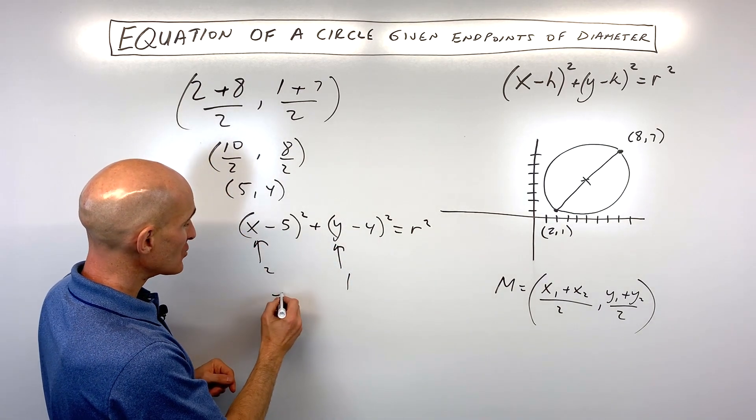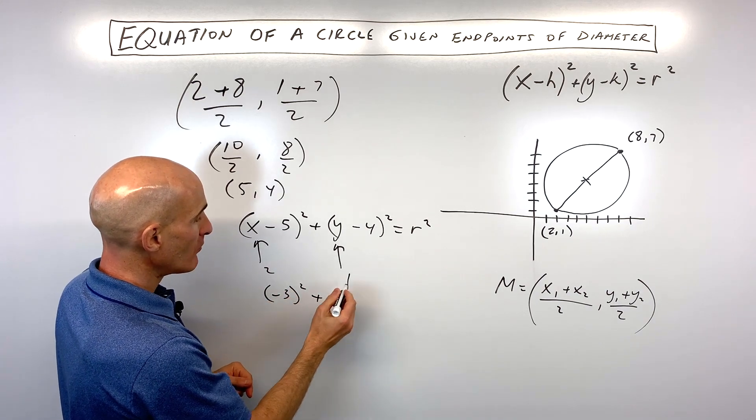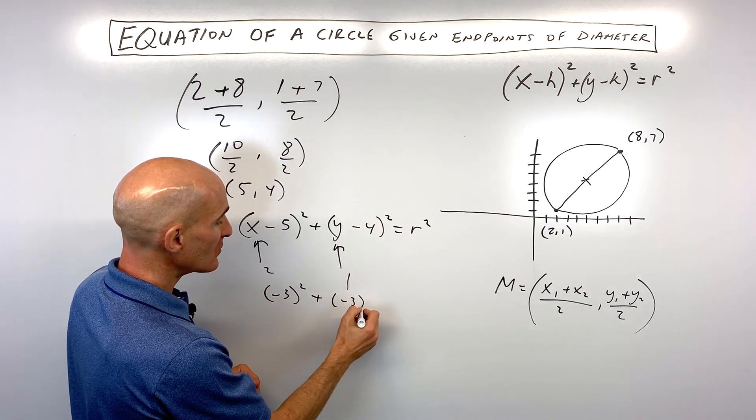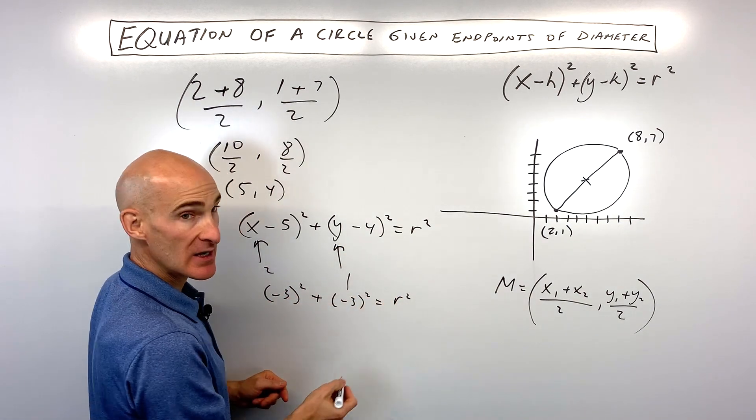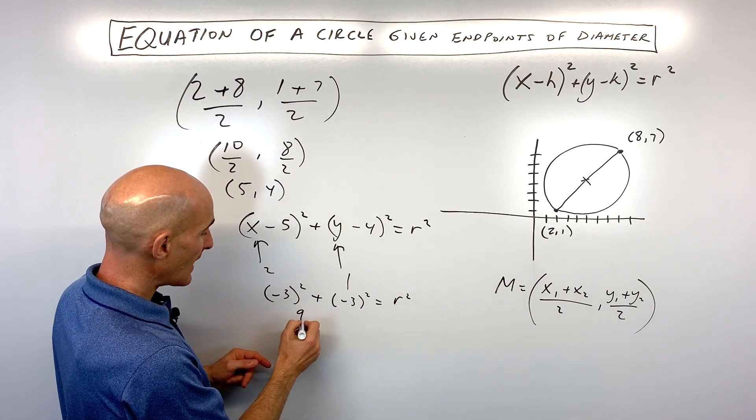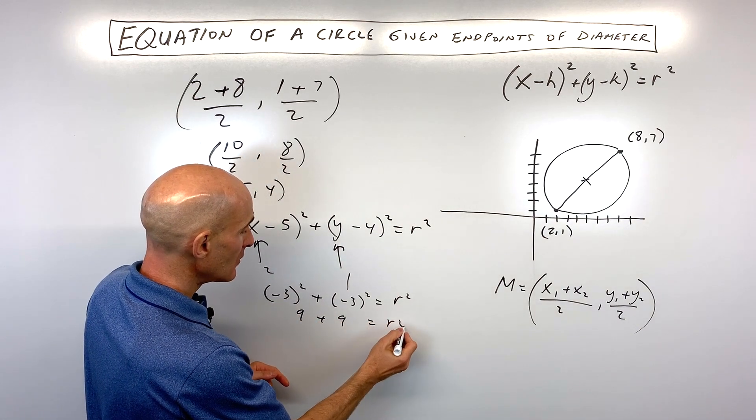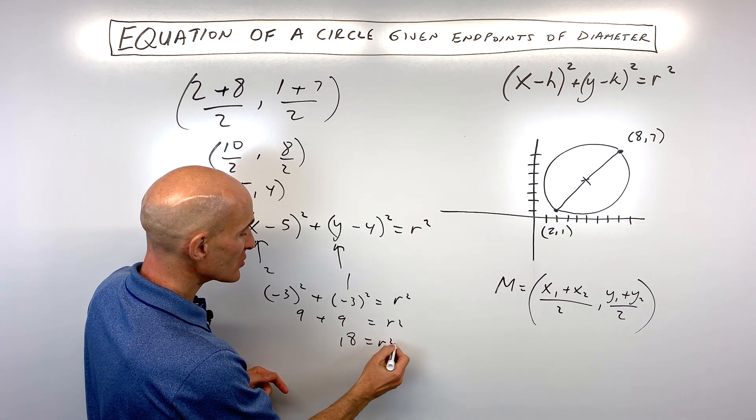So we have 2 minus 5, which is negative 3 squared, plus 1 minus 4, which is also negative 3 squared, equals our radius squared. So this is 9 plus 9, which is 18, which equals R squared.